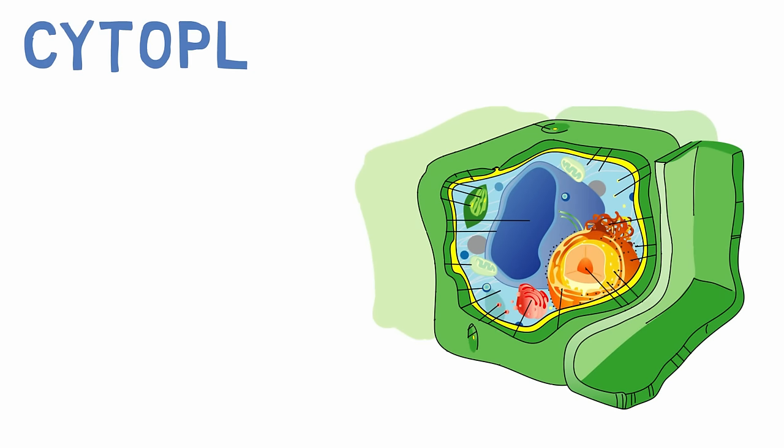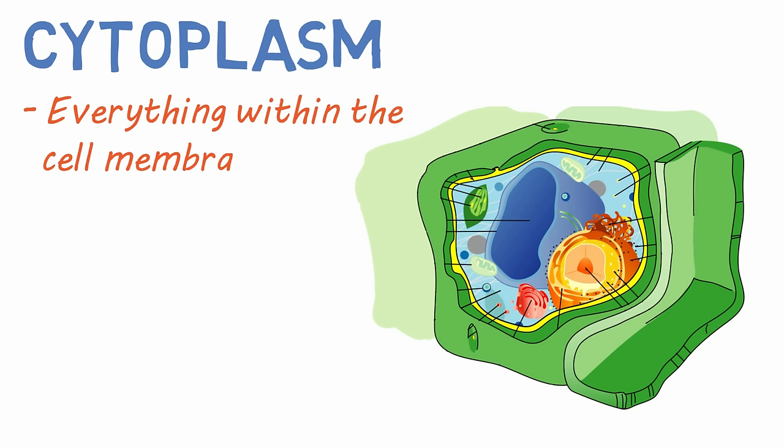Next is the cytoplasm. The cytoplasm is everything within the confines of the cell membrane, including all organelles, proteins, and other structures. This is not the same as the cytosol, which is the fluid these organelles move around in.